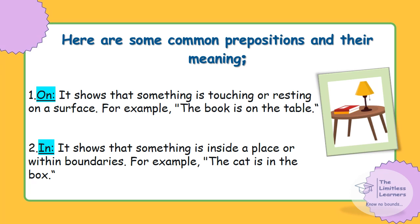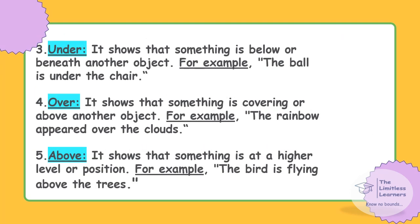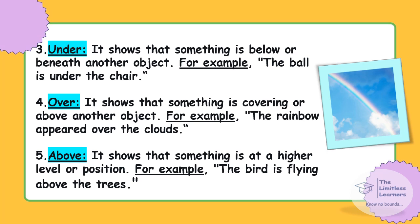For example: the book is on the table. 'In' — it shows that something is inside a place or within the boundaries. For example: the cat is in the box. 'Under' — it shows that something is below or beneath another object. For example: the ball is under the chair.